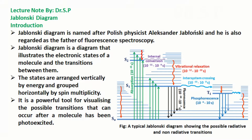In this tutorial we will discuss the Jablonski Diagram. Jablonski Diagram is named after Polish physicist Alexander Jablonski, who is also regarded as the father of fluorescence spectroscopy. It is a diagram that illustrates the electronic states of a molecule and the transitions between them.